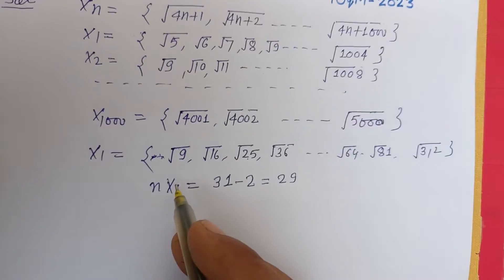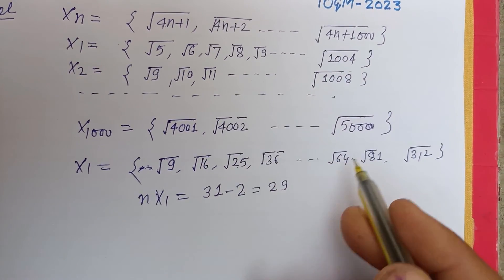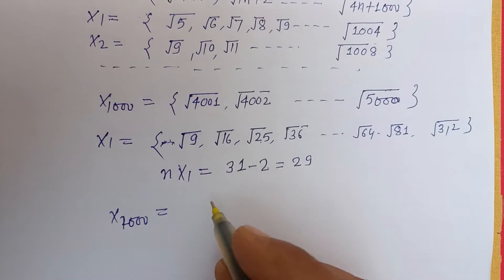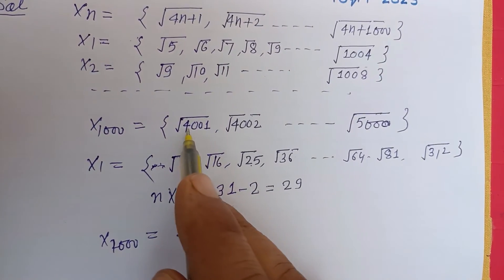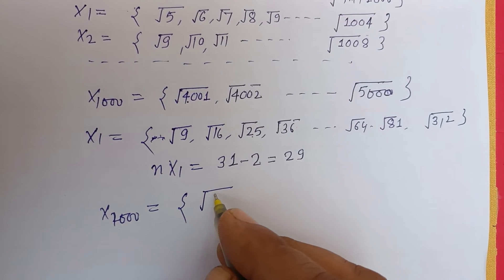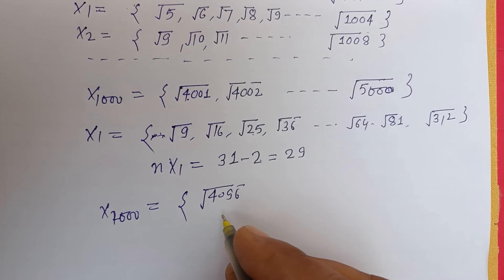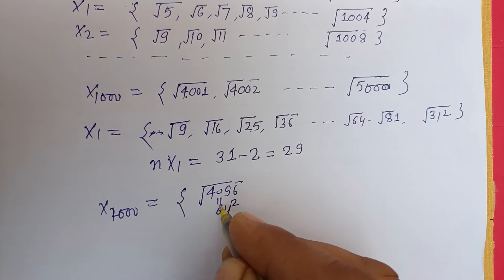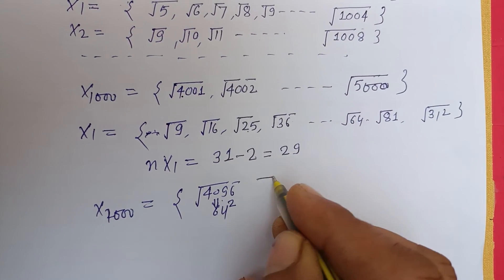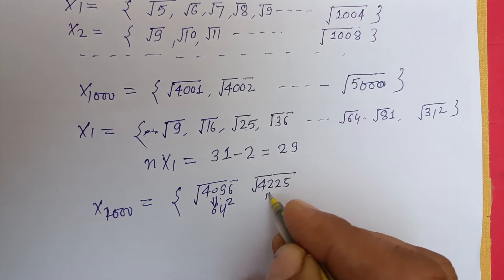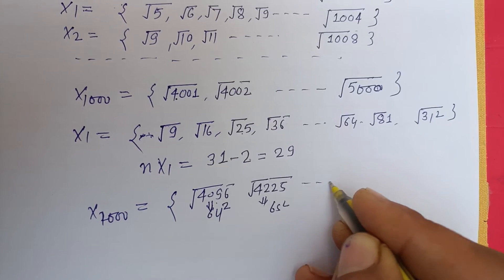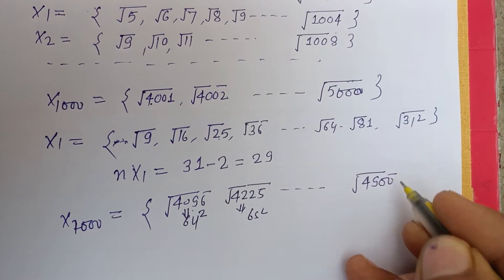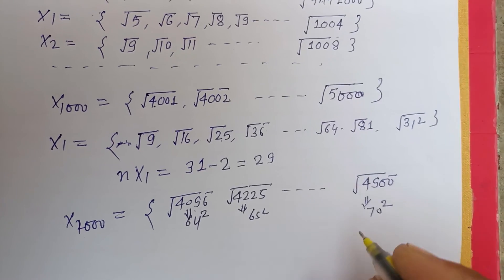And X1000, which has the least number of perfect squares, starting from √4001. The perfect square integers are 4096, which is the square of 64, then 4225, which is the square of 65, and so on. The last one is 4900, which is the square of 70.